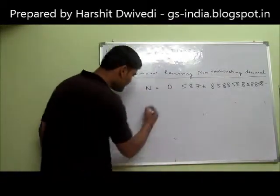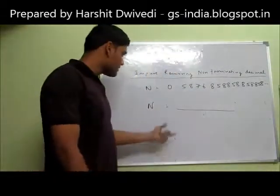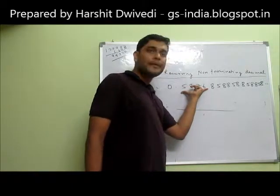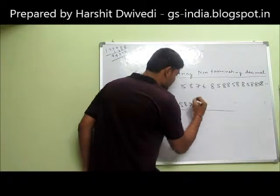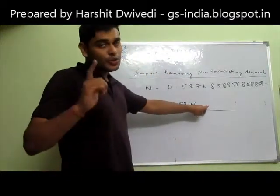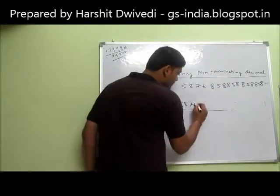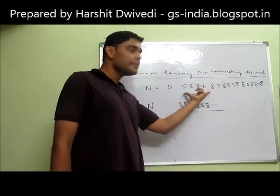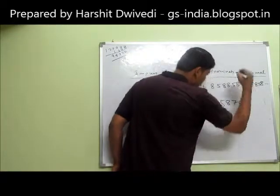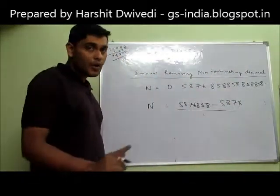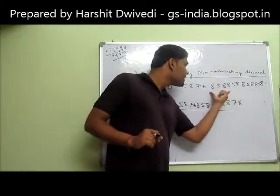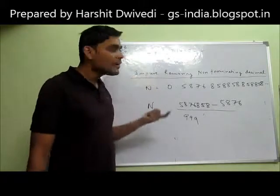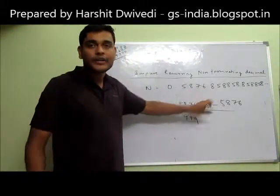n equals: first those digits that are not repeated in order — 5, 8, 7, 6 is not repeated in order, so write 5876. Then one time those digits that are being repeated — 8, 5, 8 is repeated, so write 858. Minus those digits that are not repeated: 5876. In the denominator: how many digits are getting repeated? 8, 5, 8 — 3 digits are getting repeated, so 3 times 9 equals 999. And how many digits are not getting repeated? 5, 8, 7, 6 — 4 digits, so 4 times 0 equals 0000. Denominator is 9990000.